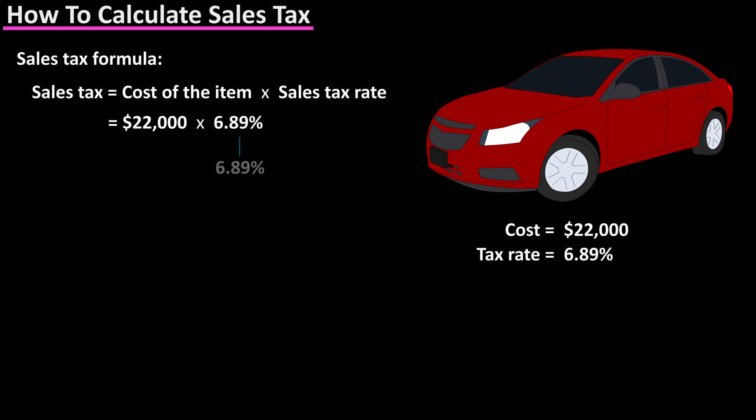We need to convert the percent into a decimal. To do this, we drop the percent sign and move the decimal point two places to the left to get .0689.